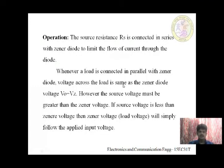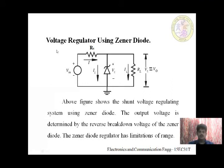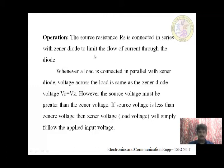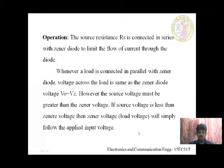Now let's understand the operation. The source resistance R_S is connected in series with the Zener diode to limit the flow of current through the diode. Whenever a load is connected in parallel, the voltage across the load equals the Zener diode voltage: V_out = V_Z. However, the source voltage must be greater than the Zener voltage. If the source voltage is less, the Zener will simply follow the applied input voltage.